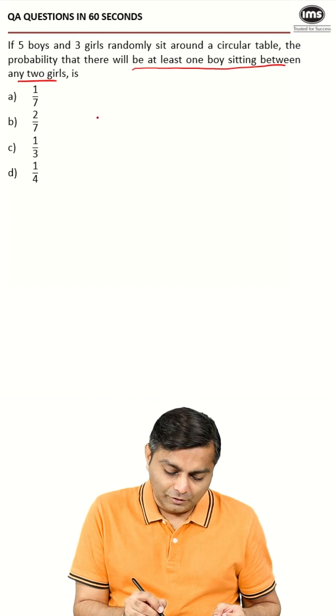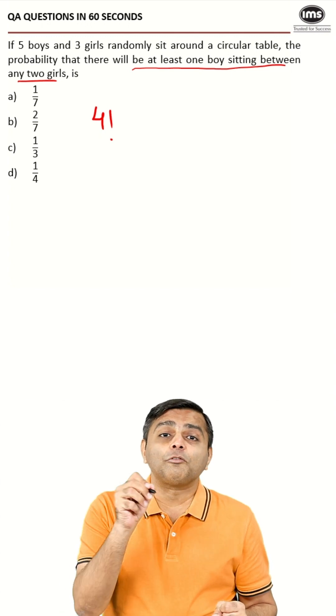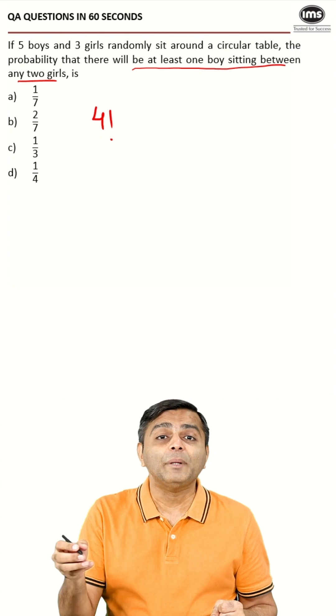So great, let's first make the boys sit. So if the boys are going to sit, they are going to sit in 4 factorial ways. Five boys, so five spaces between them. In these five spaces, we have to fit three girls. They will fit in 5P3.